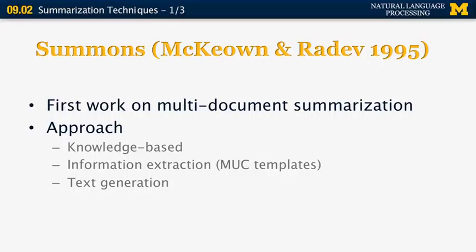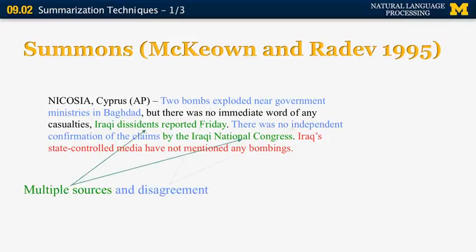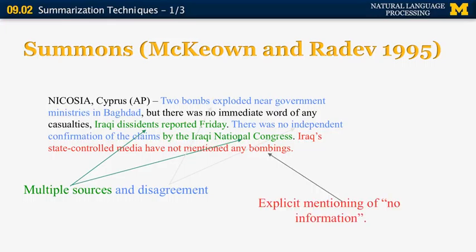The slot fillers correspond in practice to things like the perpetrator of an event, the names of the companies involved in a merger, the date and amount of the merger, and so on. Here's an example of SUMMONS output generated from multiple input documents. There are reported statements — shown in green — that correspond to sources of information, and also indicators of agreement and disagreement between different sources. If a specific slot is not filled in any particular document, a specific sentence is used to explain that there is no information about that slot.